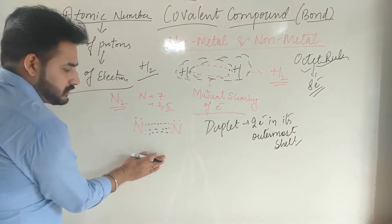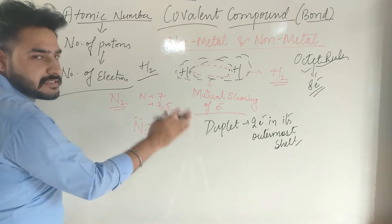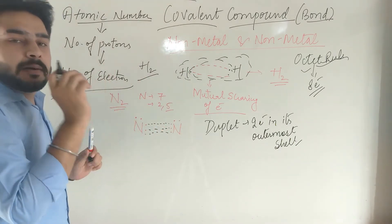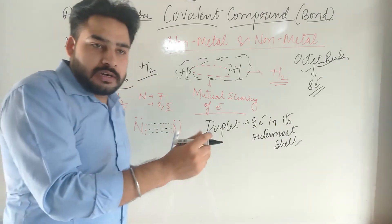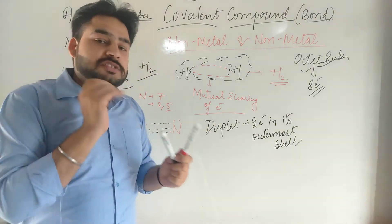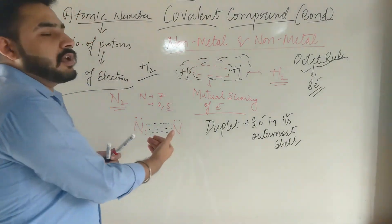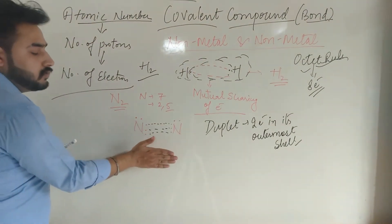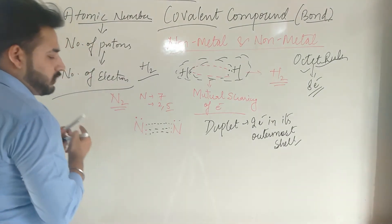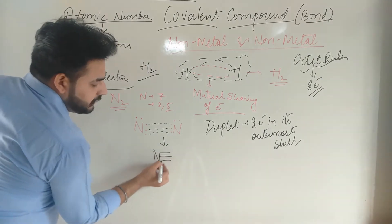This is the main difference between covalent bond and ionic bond. Ionic bond involves a complete transfer of electrons, and then ions are formed — positive (cation) and negative (anion). In a covalent bond, it is a mutual sharing of electrons. In the case of nitrogen, a triple bond is formed because nitrogen needs to share three pairs of electrons to complete its octet.